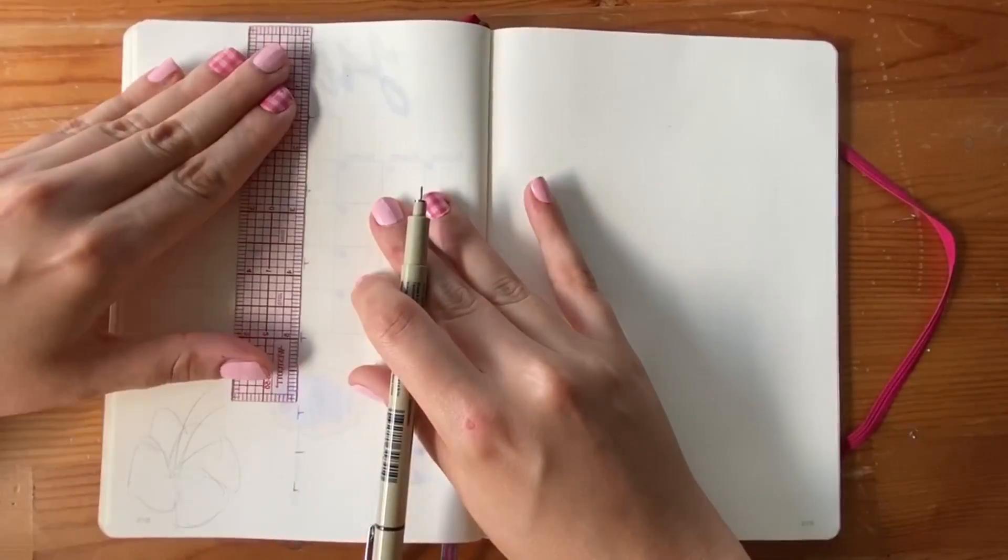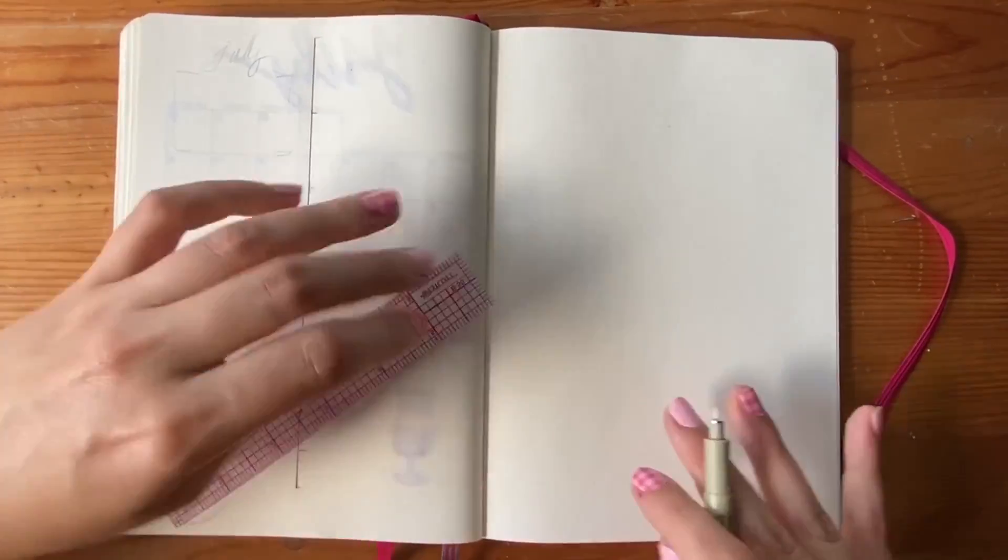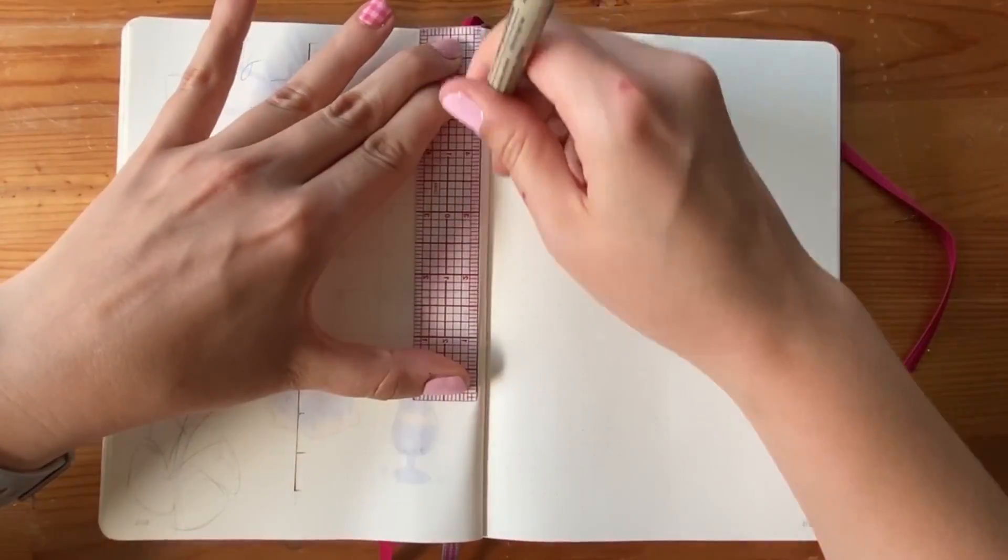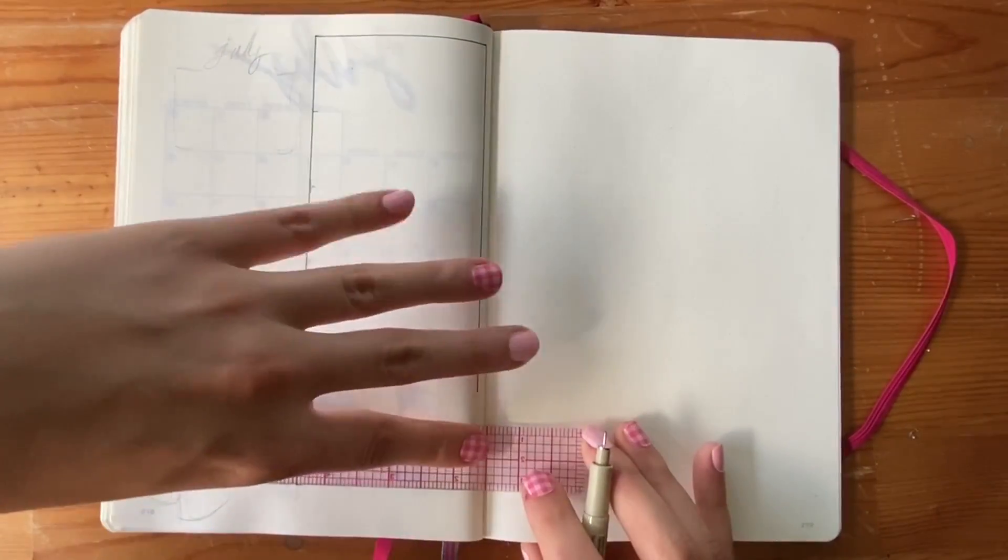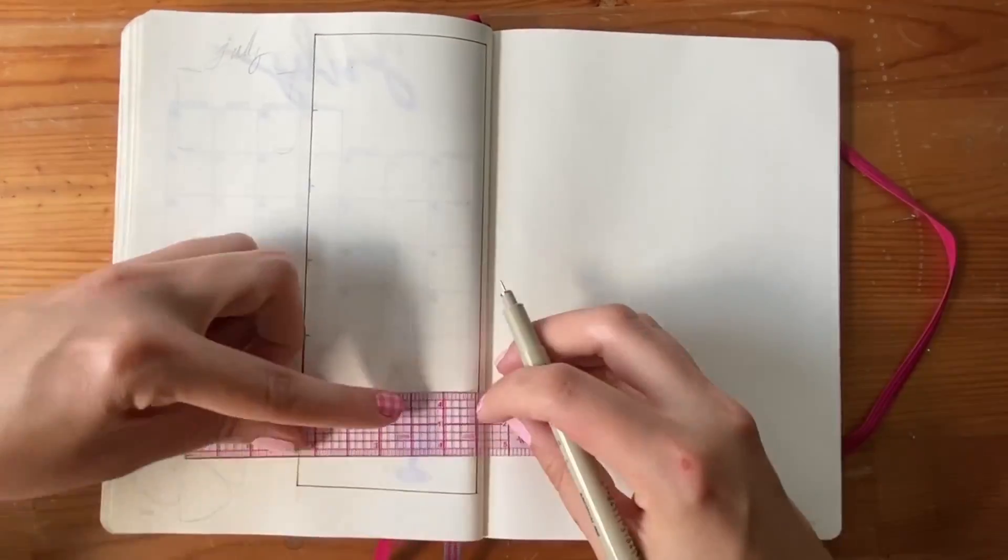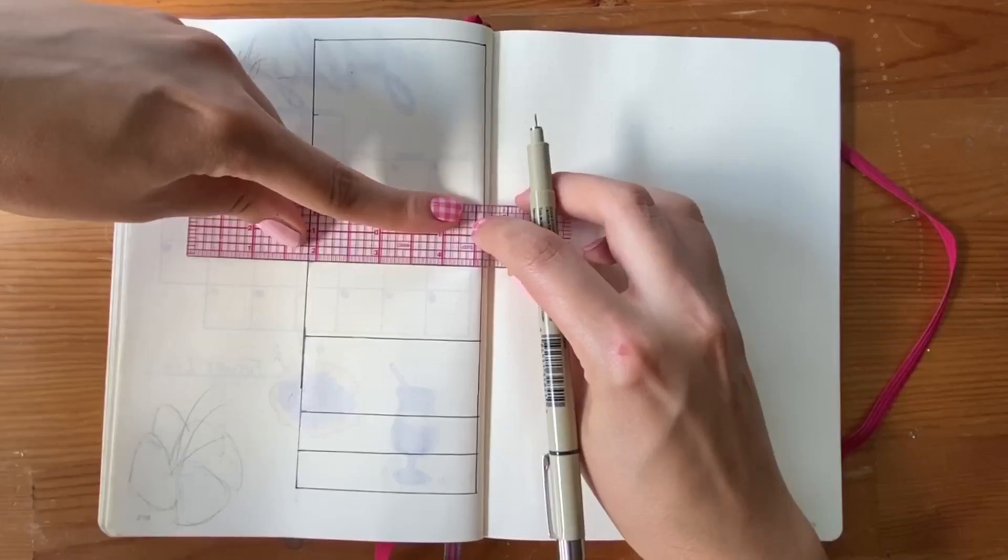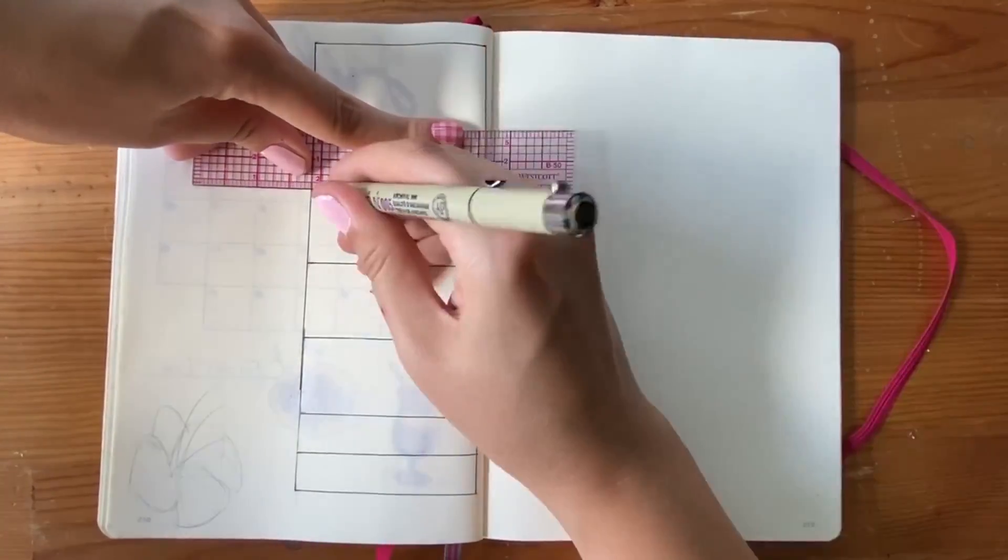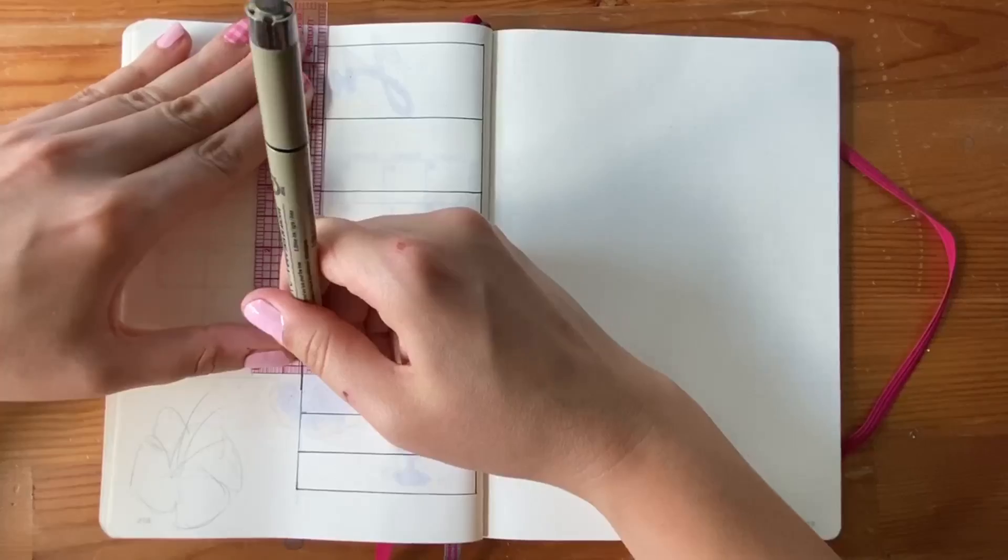As you can see I did get a little bit of shadowing from the markers on the other page that bled into my weekly spread, but because it wasn't a full bleed I wasn't super worried about it. If it was a problem then I'd probably just go ahead and tape these two pages together so that way we wouldn't see it as much. But I'm hoping that once I fill out this page it's just barely noticeable.